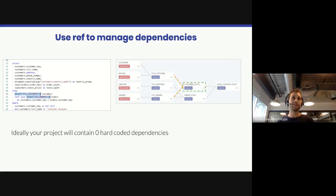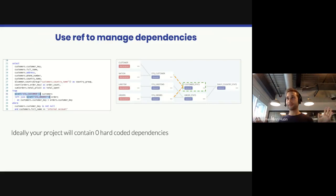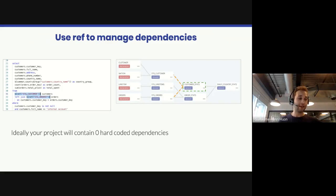Writing SQL X files. You probably already use ref — this is more of a refresher — but ideally your project will contain zero hard-coded dependencies. The benefit is that you typically only need to change one file when a table name changes in your warehouse. It also means that if you deleted your entire warehouse and re-extracted the data using something like Stitch, you could point your Dataform project at the new warehouse, click a button, and everything would work as before. Use ref as much as you can and avoid hardcoded schema or table names.